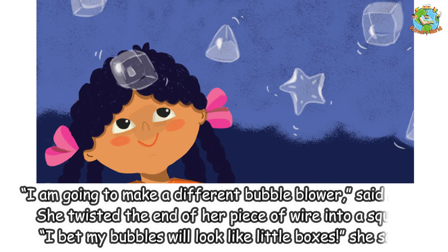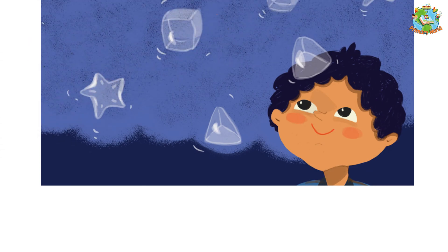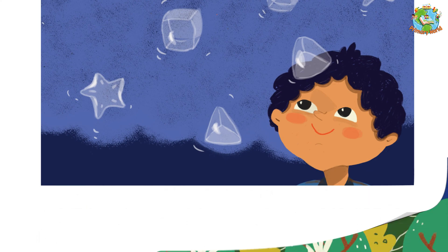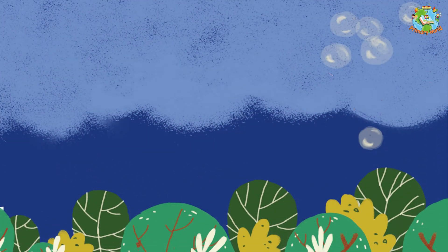"I am going to make a different bubble blower," said Maya. She twisted the end of her piece of wire into a square. "I bet my bubbles will look like little boxes," she said. "Let's make other shapes too," said Manu. He made star-shaped and triangle-shaped wands, eager to see bubbles of different shapes.